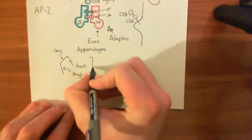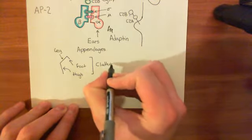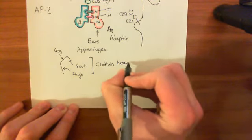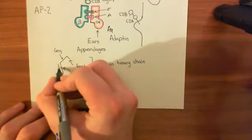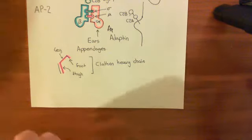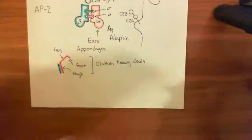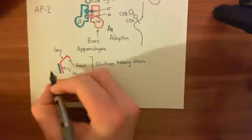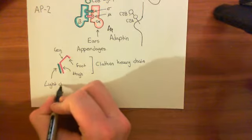This is a single clathrin protein. And this is actually, strictly speaking, a clathrin heavy chain. There is also a clathrin light chain. The clathrin light chain associates with this portion here, which is the equivalent of the thigh in our lower limb analogy. So here's the heavy chain in violet pink, and the light chain associates with this thigh portion here.